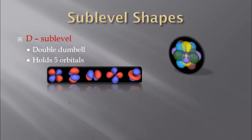The third sublevel shape is the D sublevel. I like to call this the double dumbbell, just to keep the D's together. It looks more like a double peanut, but I like the double dumbbell. It holds five different shapes. We've got our double dumbbell where we have two kind of overlapped, lying along the X, Y, and Z axis. You can see how this totally changes shape as we get into that fifth orbital.